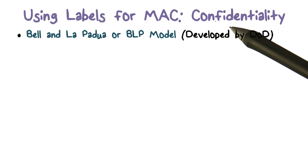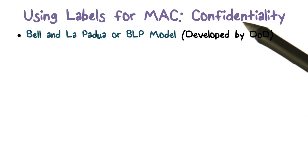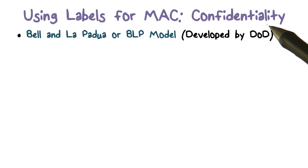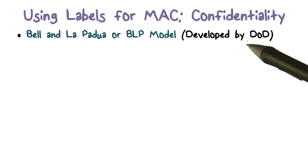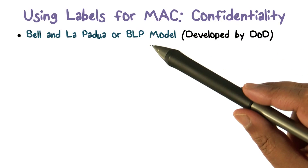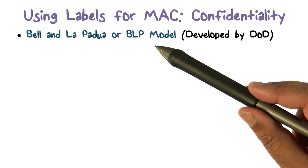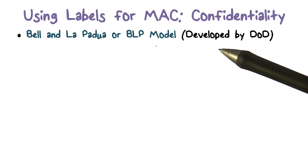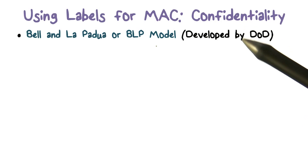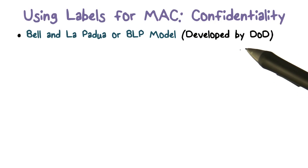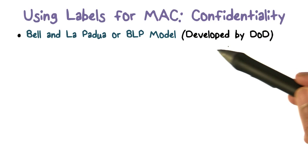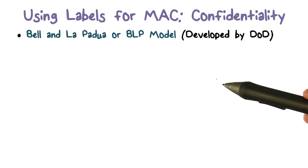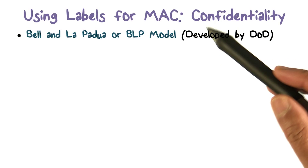We've been talking about labels and their use in mandatory access control. Now we're going to get to a concrete model. This is a model that deals with confidentiality, and it was introduced earlier — it's the Bell and LaPadula model.